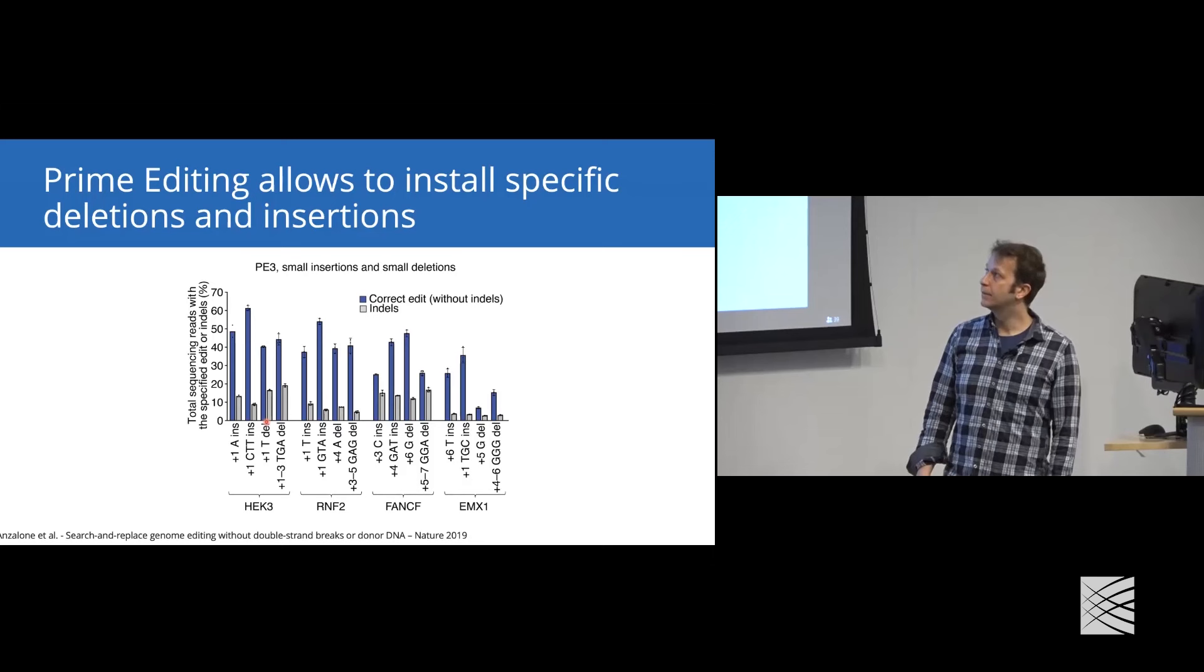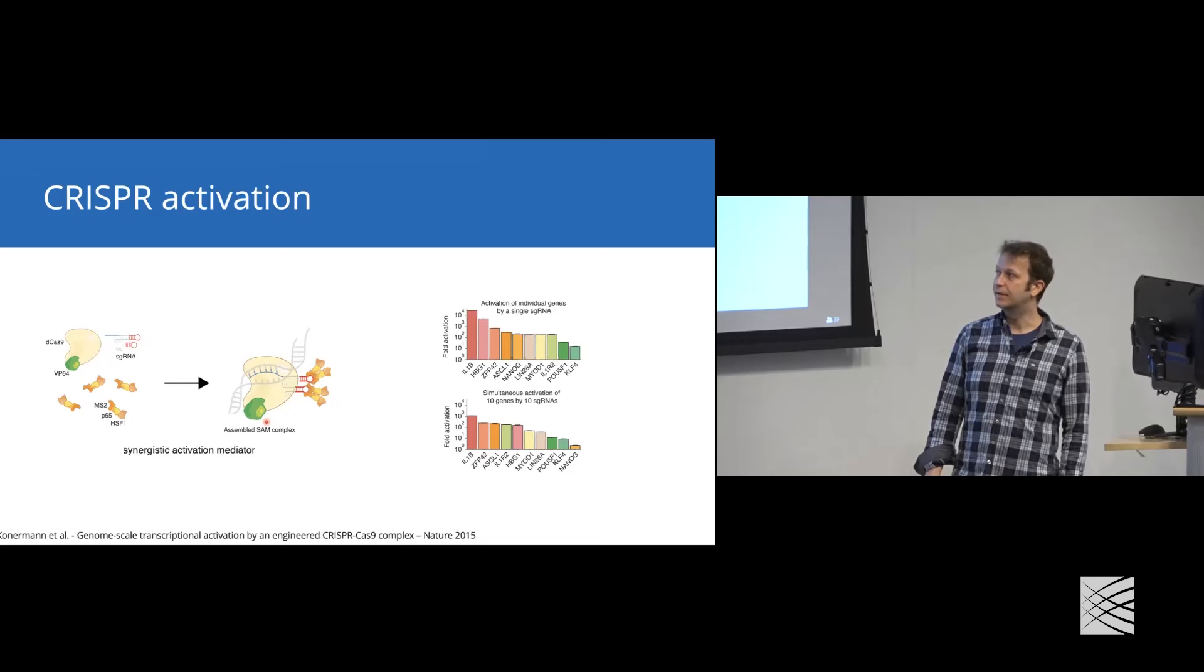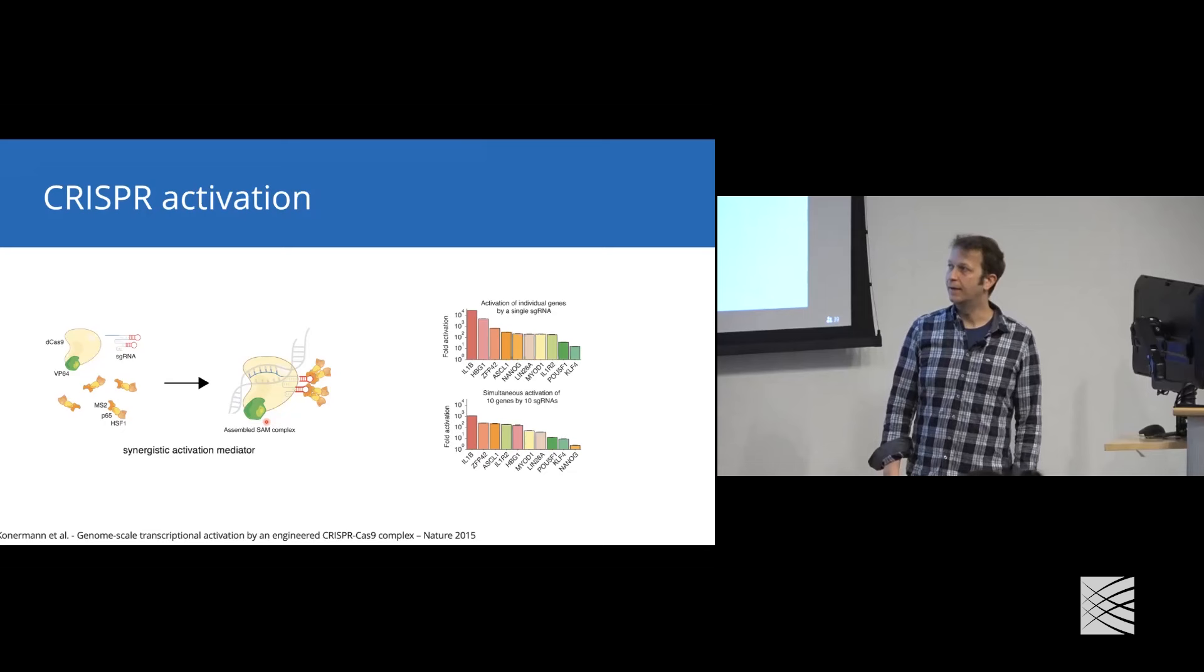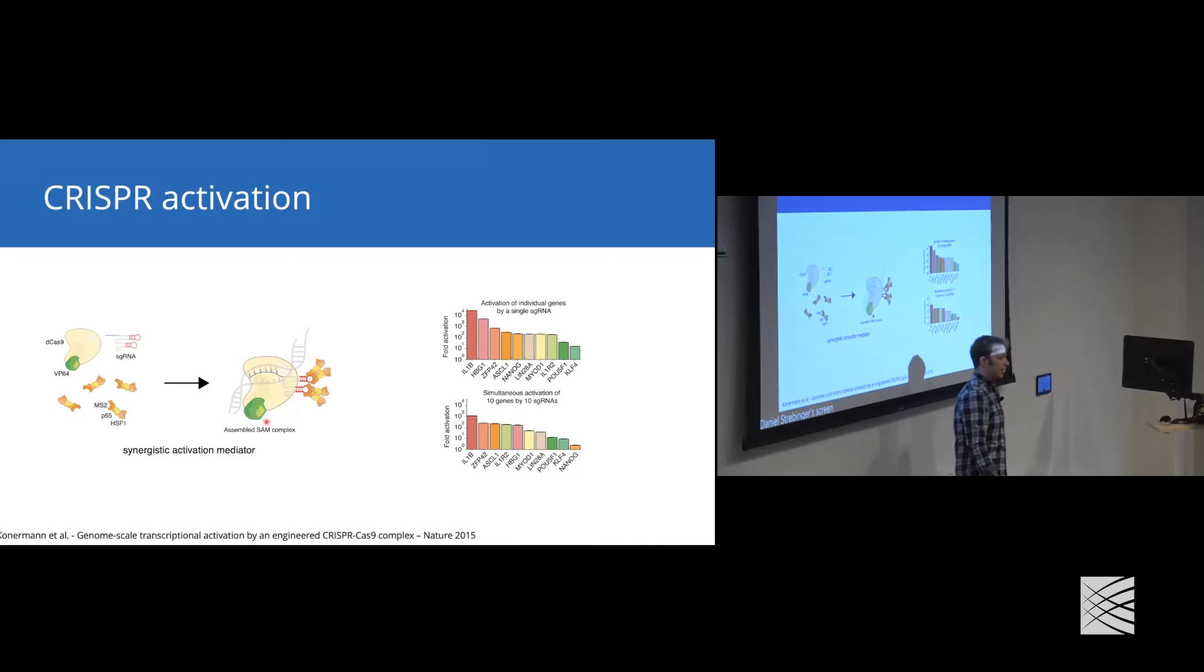Another thing you can do with nuclease dead Cas9s is use those Cas9s as transcription factors. The idea being, if we take a dead Cas9 and fuse it to a transactivation domain, in this case called VP64, that would already serve as a transcription factor. But to increase the transcription output, we can insert MS2 loops into the guide RNAs. MS2 loops are bound by MCP or MS2 binding protein, which we can fuse to even more transactivating domains, for example p65 and HSF1. Upon engaging with a target, this guide RNA would recruit, together with the Cas9 VP64 fusion, multiple copies of these transactivators.